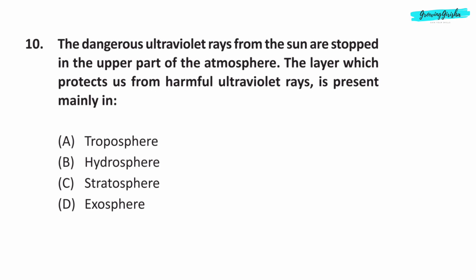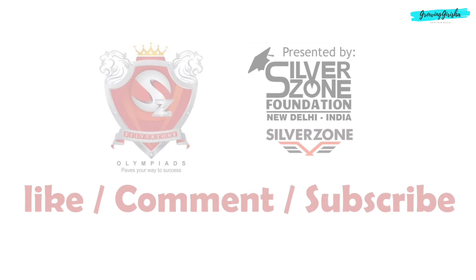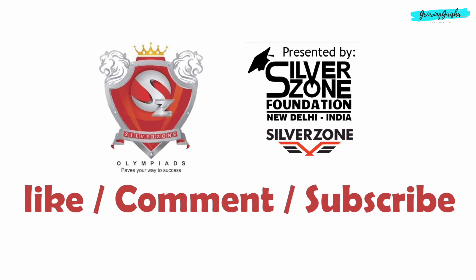Question 10. The dangerous ultraviolet rays from the sun are stopped in the upper part of the atmosphere. The layer which protects us from harmful ultraviolet rays is present mainly in Option C: Stratosphere. Thank you for watching. Like, comment, subscribe to another video. Bye-bye.